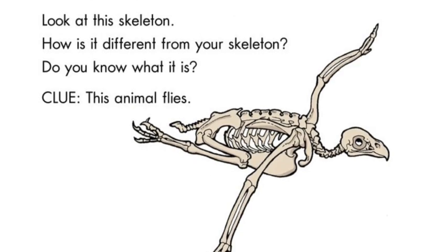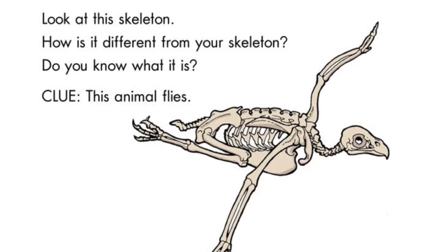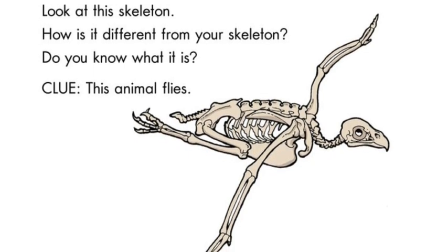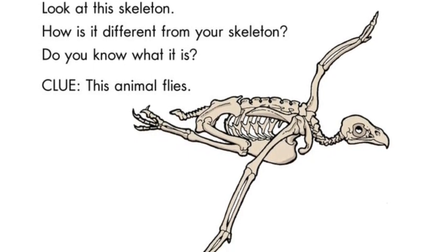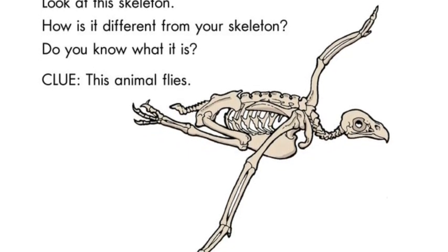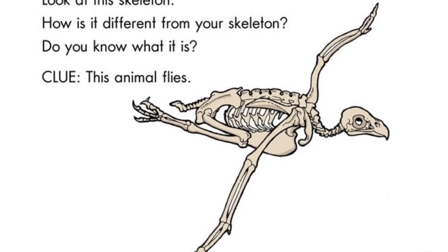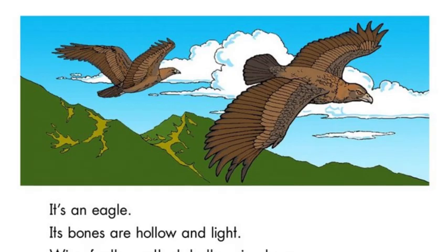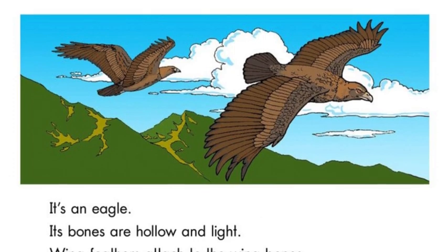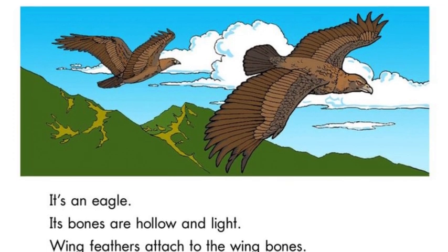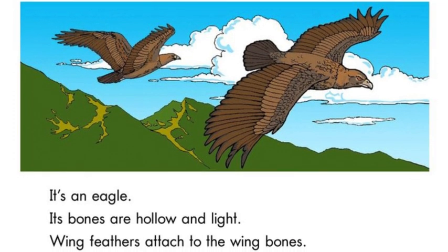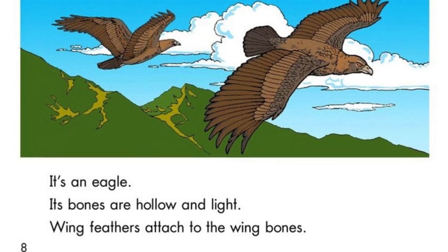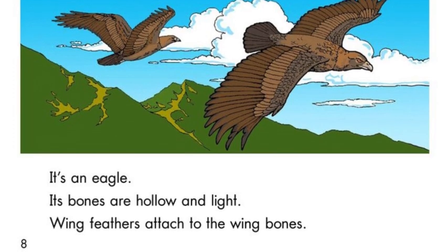Look at this skeleton. How is it different from your skeleton? Do you know what it is? Clue: this animal flies. It is an eagle. Its bones are hollow and light. Wing feathers attach to the wing bones.